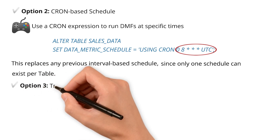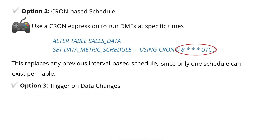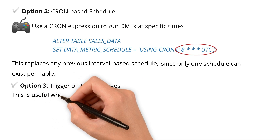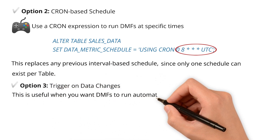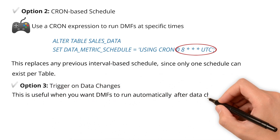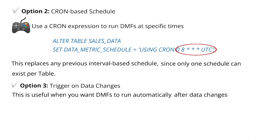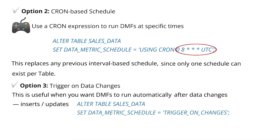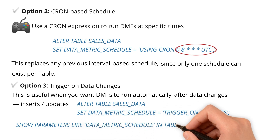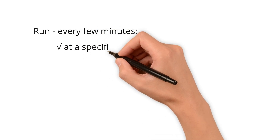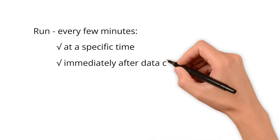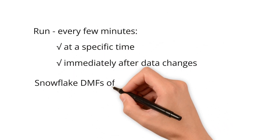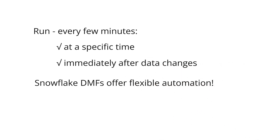Option three: trigger on data changes — this is useful when you want DMFs to run automatically after inserts or updates. You can check the current schedule using SHOW PARAMETERS. So whether you want checks to run every few minutes, at a specific time, or immediately after data changes, Snowflake DMFs offer flexible automation.